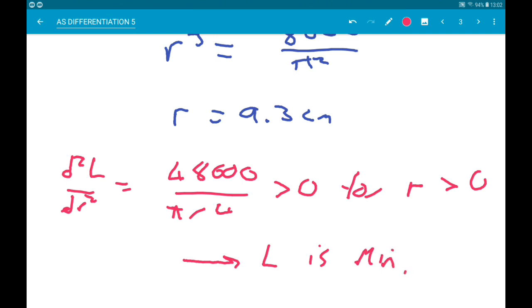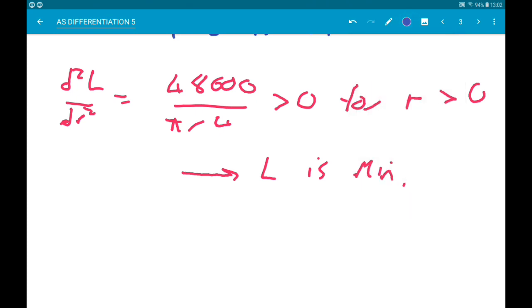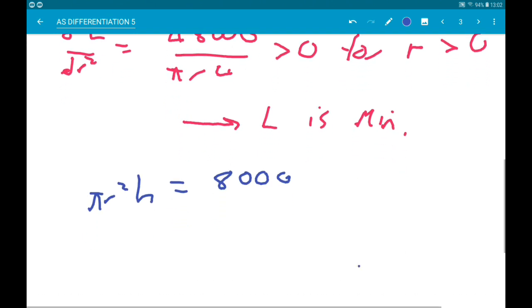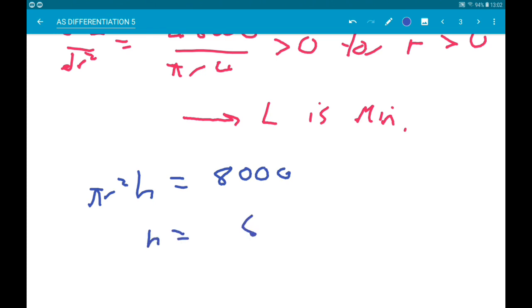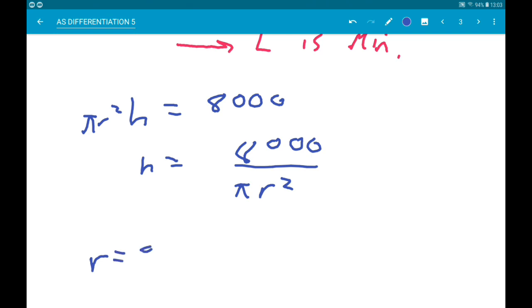Okay so now we just need to find h. To do that, remember that the volume was πr²h which had to be 8,000. From that we can get h is 8,000 over π times r². Now when r is 9.3, h is gonna be, for that I get 29.4 centimeters.